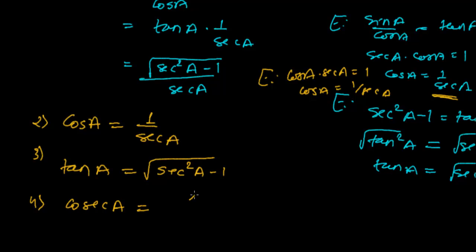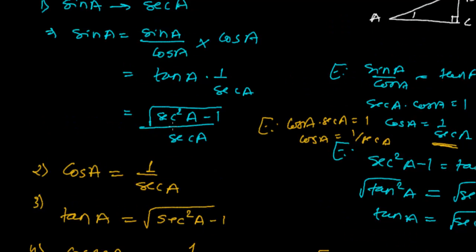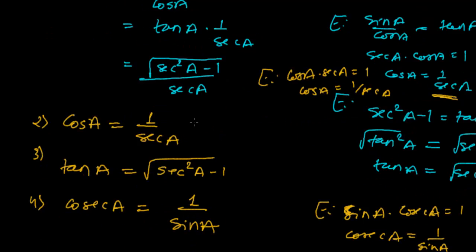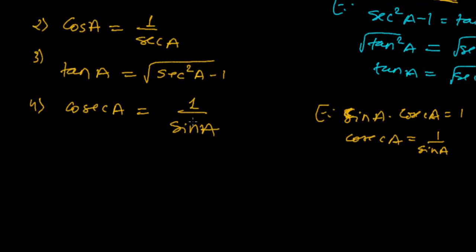We know that because sin A times cosec A equals to 1. Therefore cosec A equals to 1 upon sin A. And we know that sin A equals to sec square A minus 1 upon sec A. So I'm just writing here, 1 whole upon,